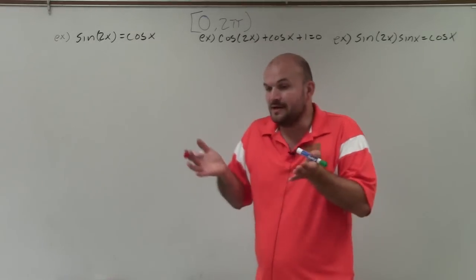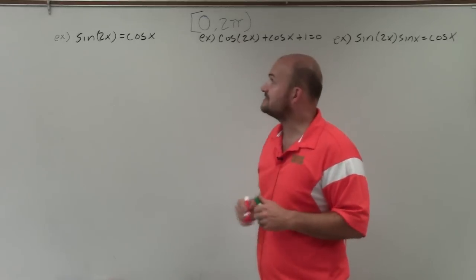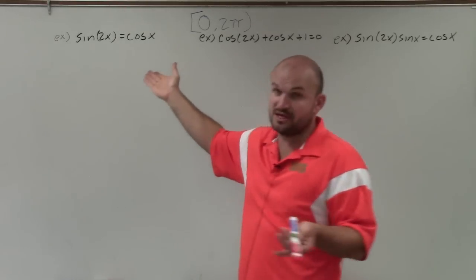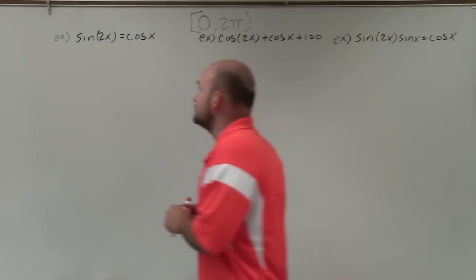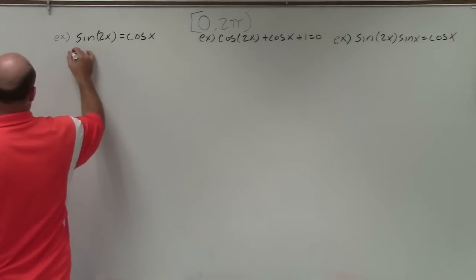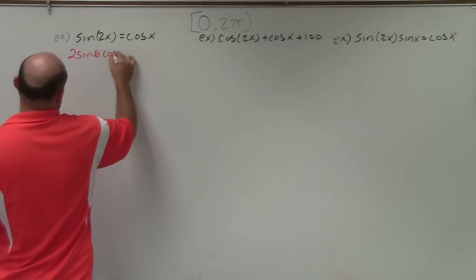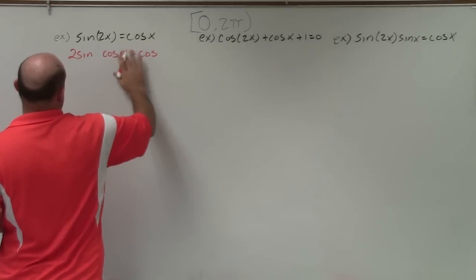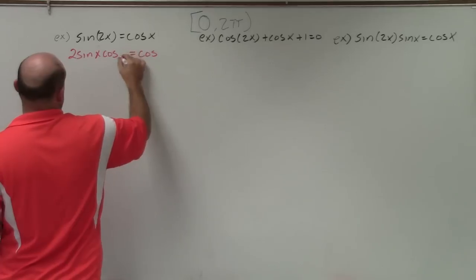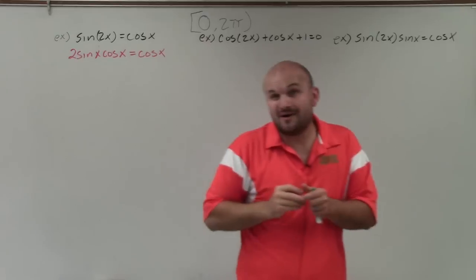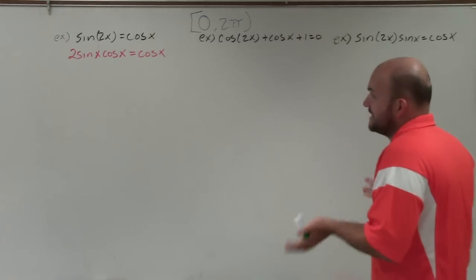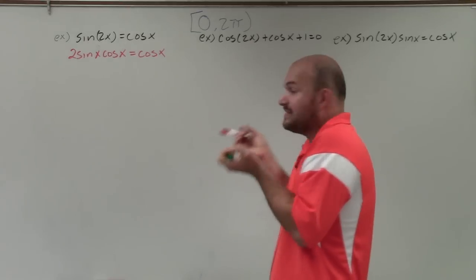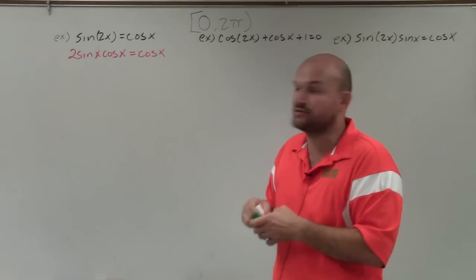There are multiple ways to approach this. If I have sine of 2x equals cosine of x, I'm going to use the double-angle formula for sine of 2x to rewrite it. The sine of 2x is equivalent to 2 sine of x cosine of x, which equals cosine of x. Now everything is in terms of sines and cosines. Since I have two different trig values, I need to get them to the same side and set it equal to 0 so I can use factoring.